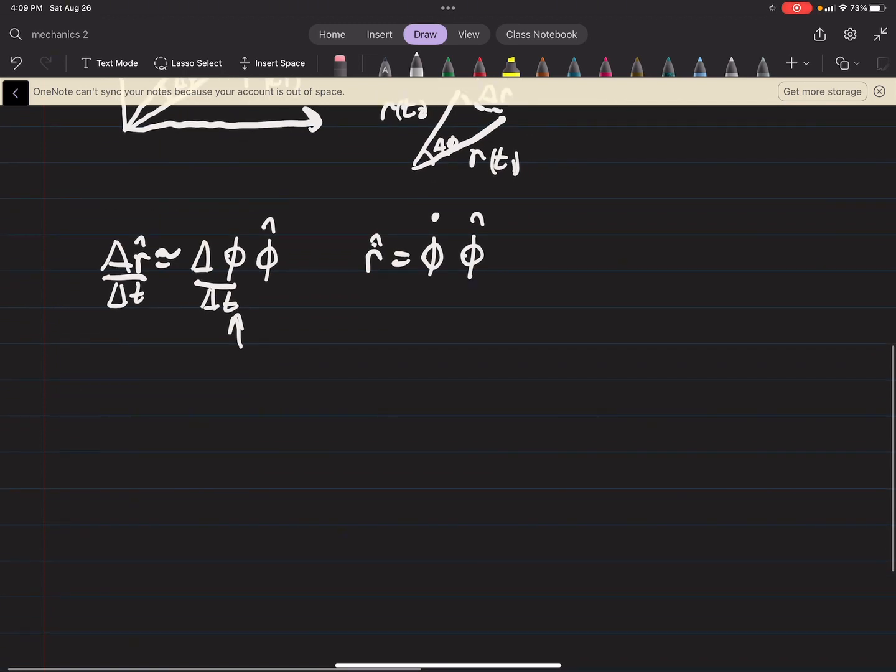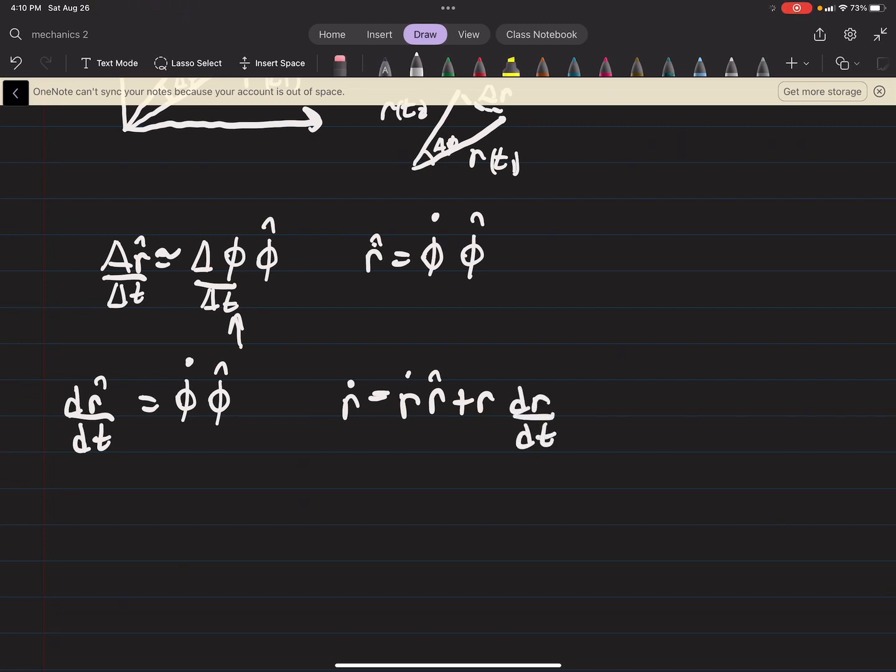Okay. So, we know, and maybe this is a better notation, dr/dt, dr hat/dt, I should say, is phi dot phi hat. And like I said, this is all from section 1.7. I'm just kind of doing it again to make it a little nicer. So, then r dot, since it is r dot r hat plus r dr hat/dt. Okay. Well, we can plug this in, and we get r dot r hat plus r phi dot phi hat.